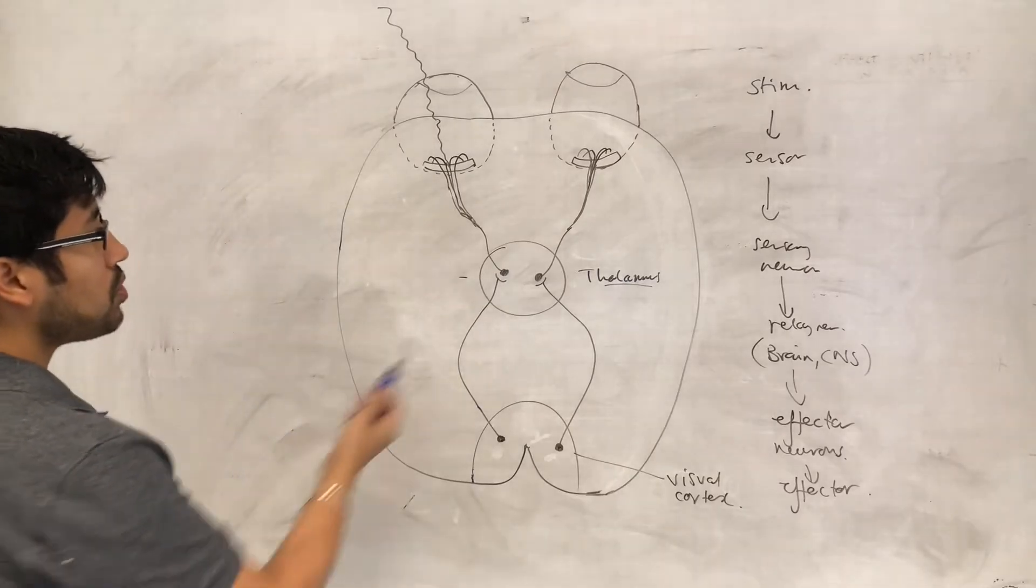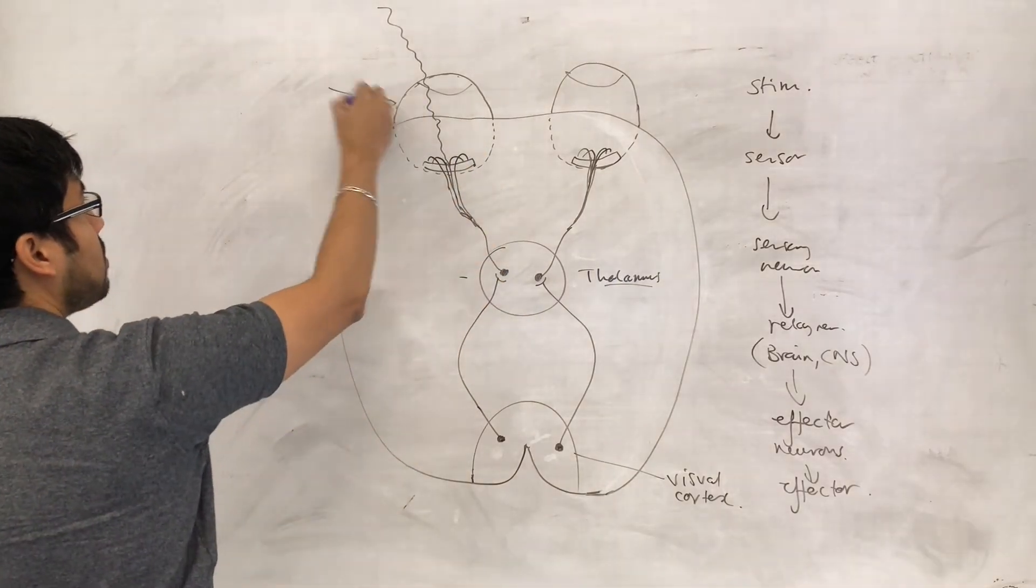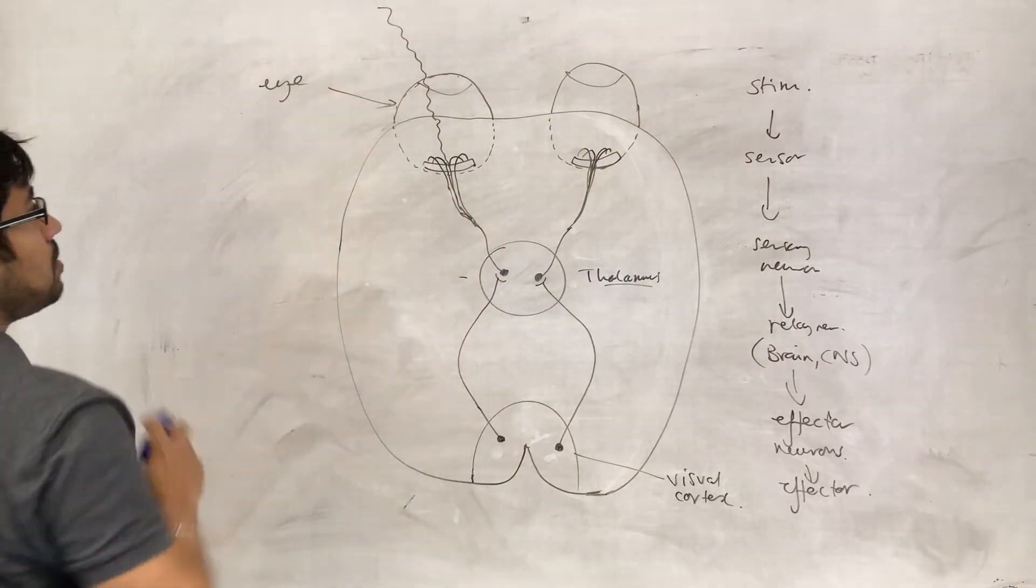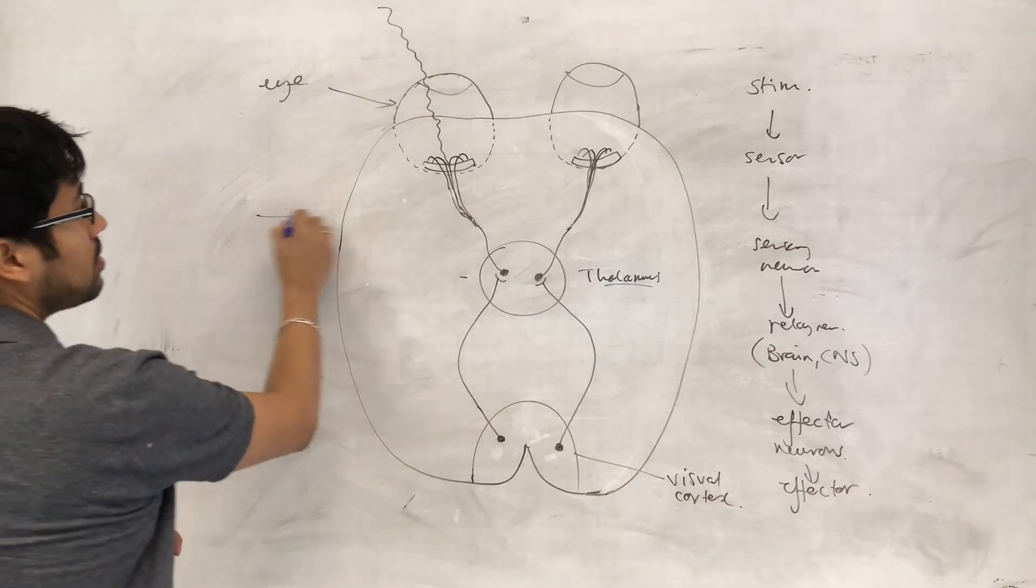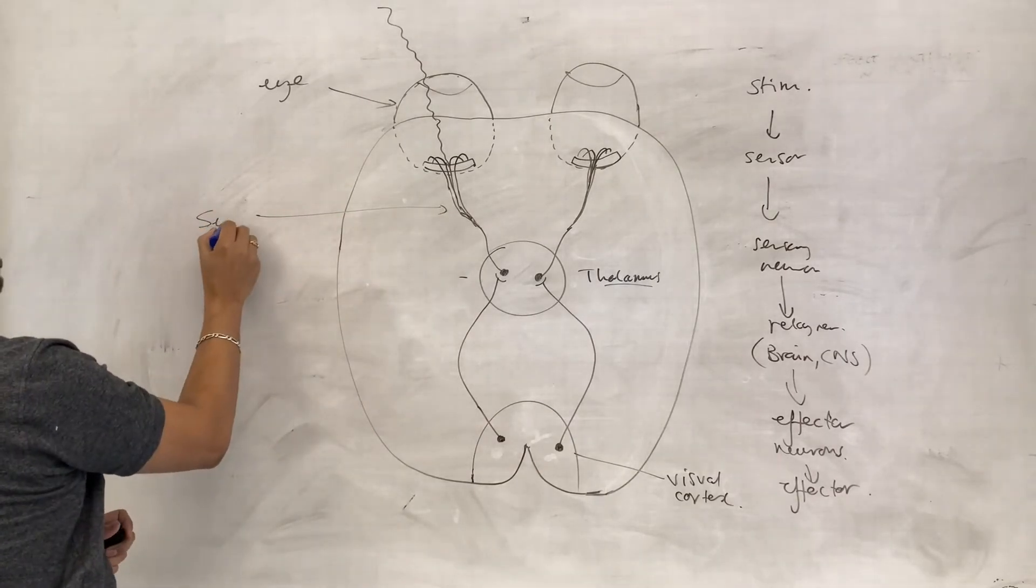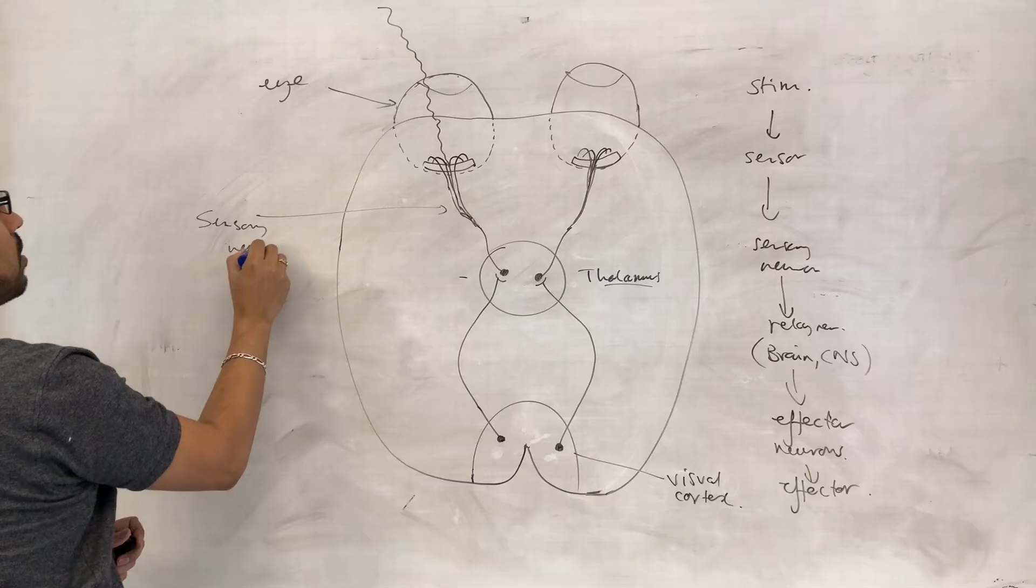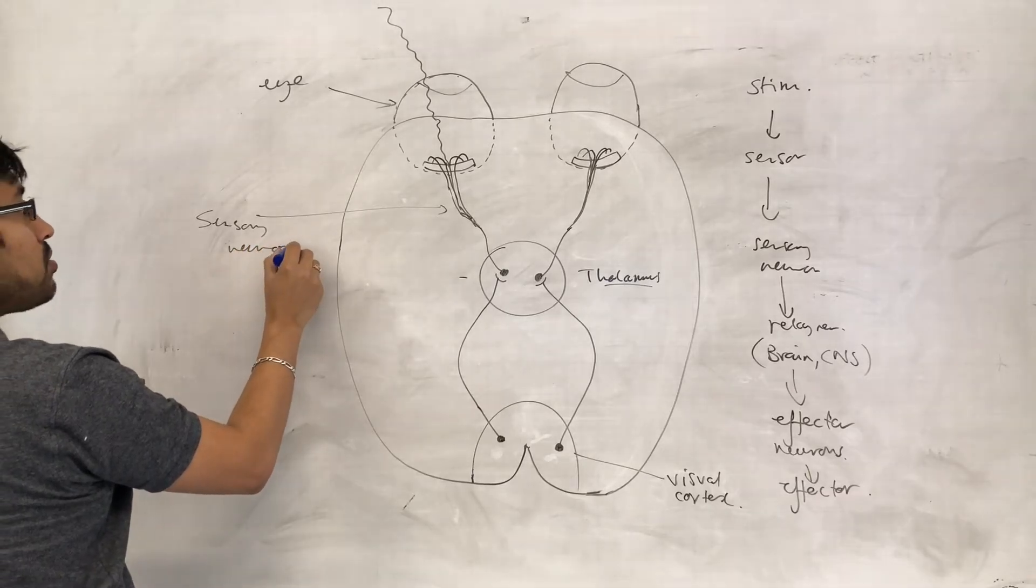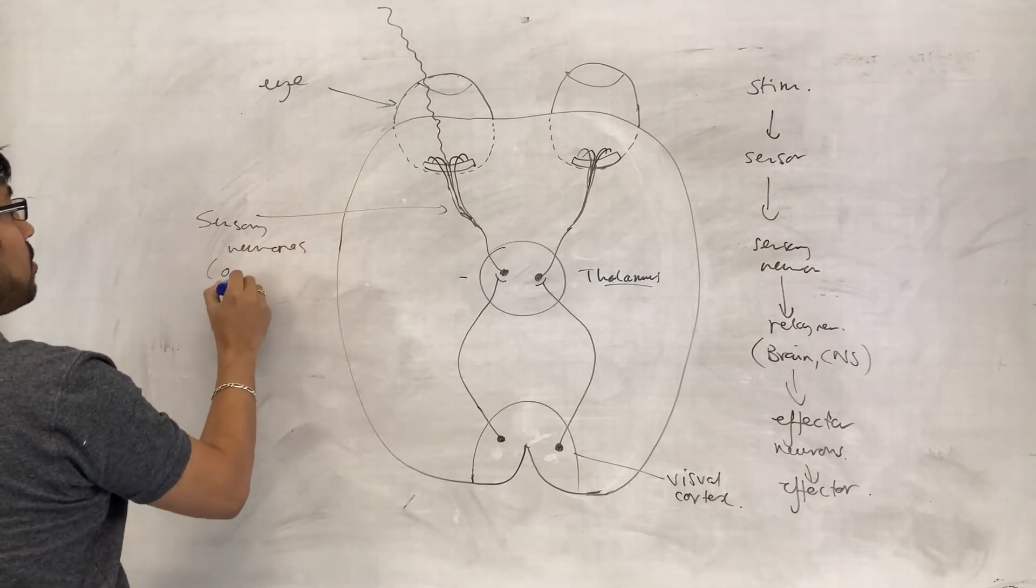So that's the visual cortex, that's the thalamus, that's your sensor, that's the eye. In this case, it's the eye that is in effect the sensory neuron, or sensory neurons. And in this case, it's the neurons of the optic nerve.